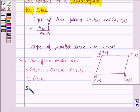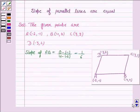Now, slope of AB is given by [0 - (-1)]/[4 - (-2)] by this formula, and this is equal to 1/6.